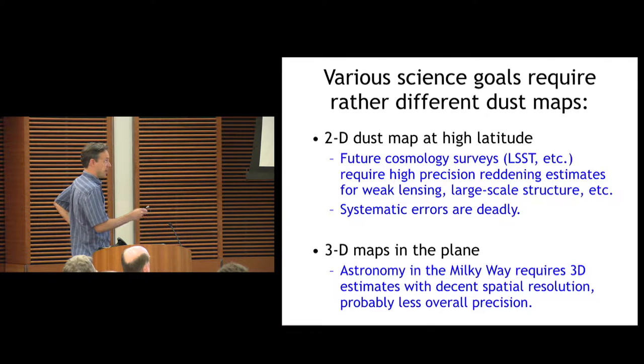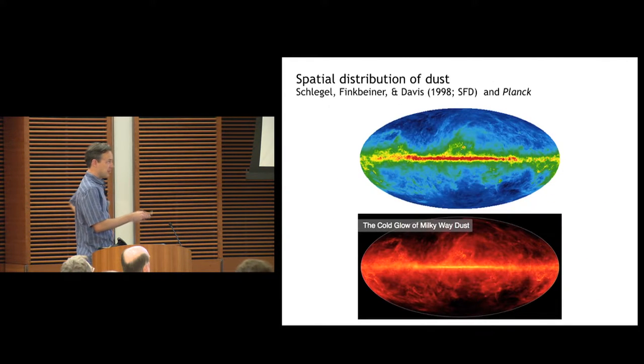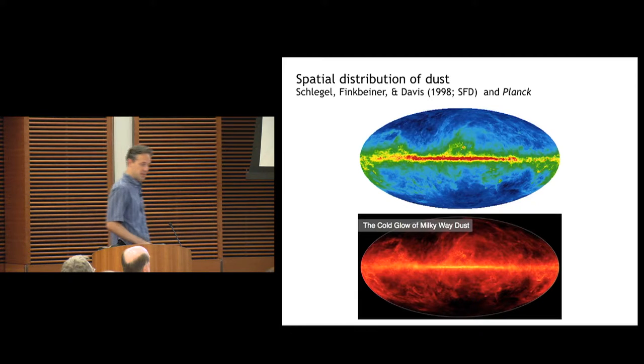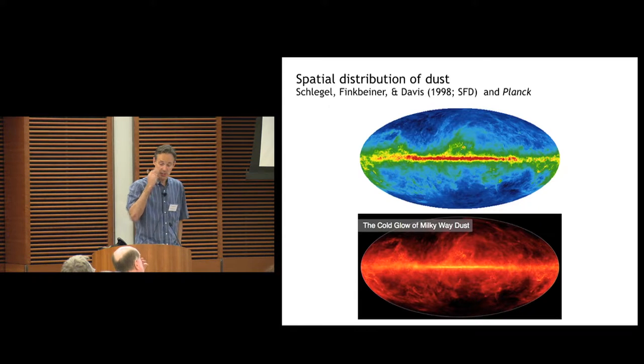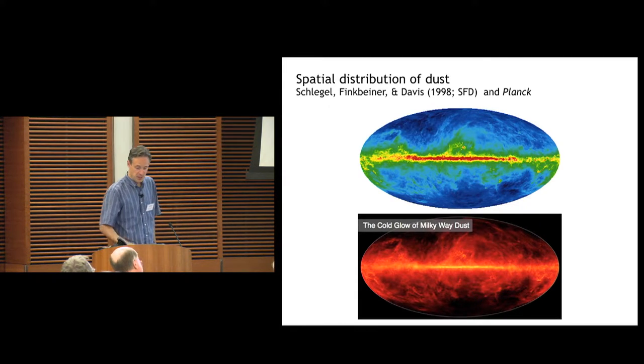These are the kinds of maps we had in the past. That's the SFD map from 98. This is a recent version of the Planck dust map. They're made in very similar ways just looking at the emission from the dust. But there are problems.